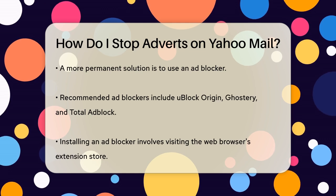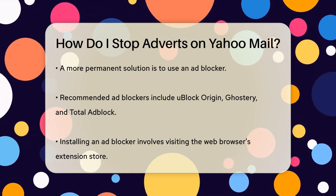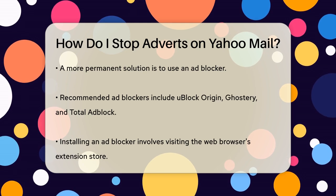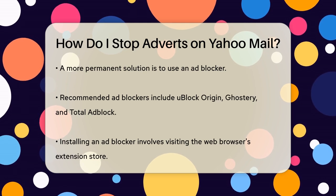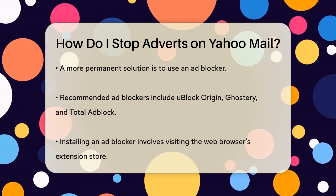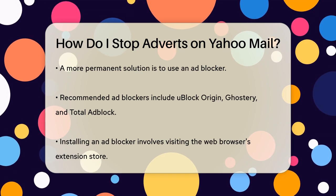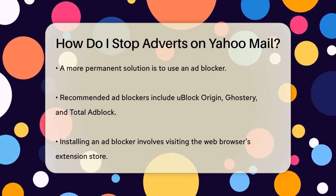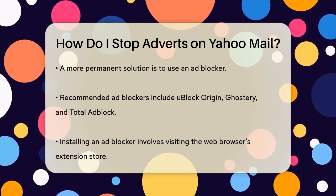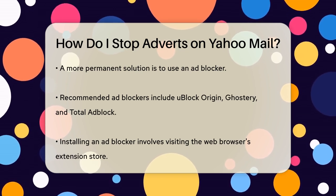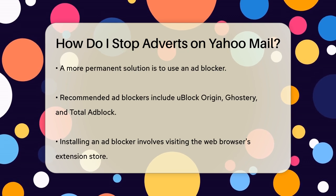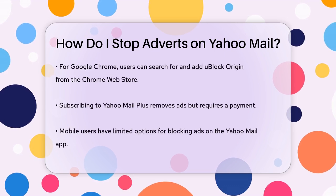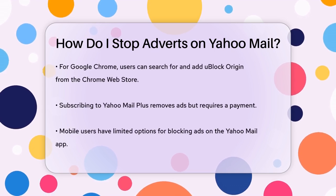For a more permanent solution, you can use an ad blocker. There are several good ones out there such as uBlock Origin, Ghostery, and Total Ad Block. These ad blockers work by checking the scripts on the websites you visit and blocking any that match their list of ad scripts. To install an ad blocker, you simply need to go to your web browser's extension store, find the ad blocker you want, and install it.